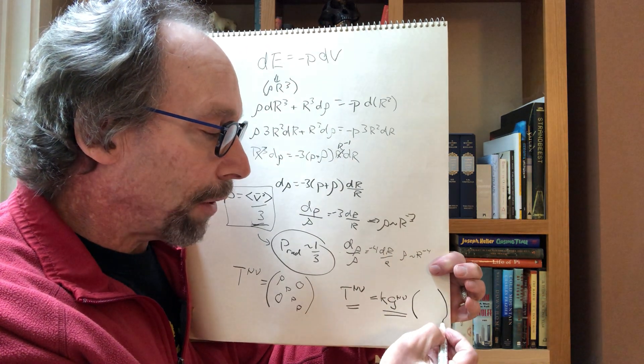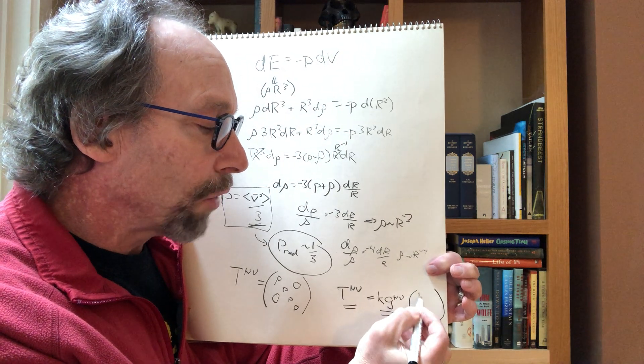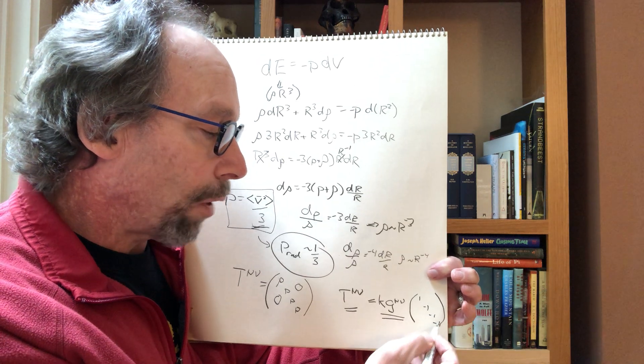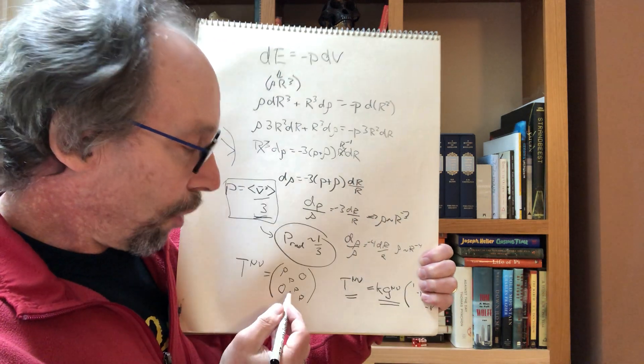And so the energy-momentum of empty space, if it's going to have non-zero energy-momentum, has to be proportional to the metric. But, well, in the units I'm going to, in the convention I'm going to use, the metric in flat space is 1, minus 1, minus 1, minus 1.